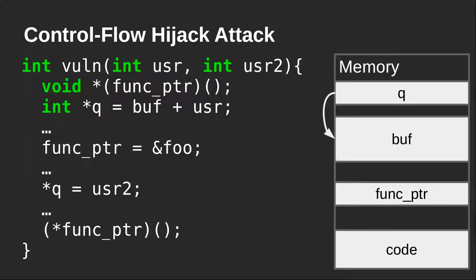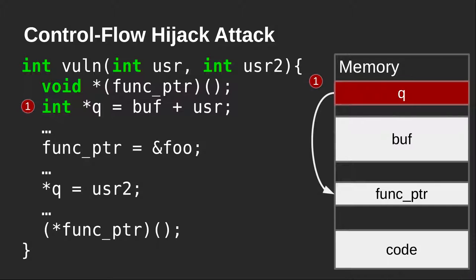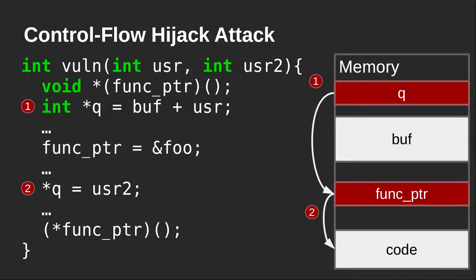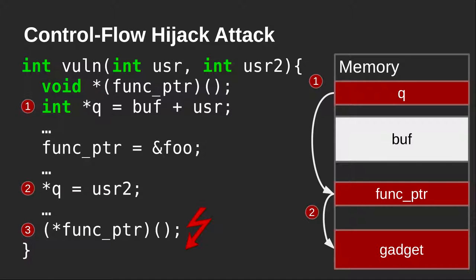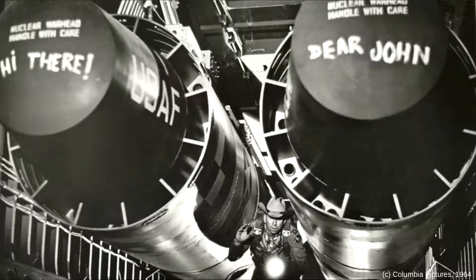Initially in a valid execution, the pointer queue points somewhere into the buffer, and user2 would be written into the buffer in a legitimate way. But the attacker can use the addition to redirect the pointer queue to point to the function pointer's memory location instead of the buffer. When queue is dereferenced, the attacker overrides the function pointer and makes it point into the code below. As soon as the program dereferences this overwritten function pointer, the attacker can start executing code they control and reuse different gadgets.